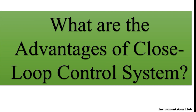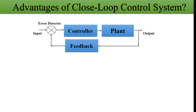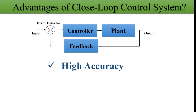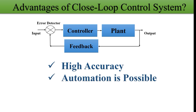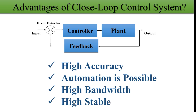The next question: what are the advantages of a closed loop control system? Introduce it first: a closed loop system is a system in which the controlling action depends on the output of the system, and feedback is present. The advantages: feedback helps to give accurate readings and reduce error, so the closed loop system has higher accuracy. Since feedback is present, automation is possible. The system has high bandwidth, and it can be made more stable by adjusting the sensitivity of the control system.